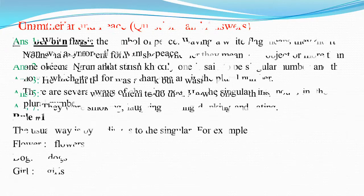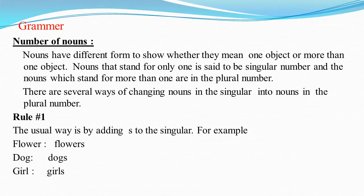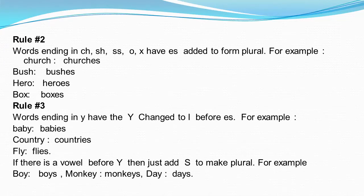Now let's move on to the grammar: Number of nouns. Nouns have different forms to show whether they mean one object or more than one object. Nouns that stand for only one are said to be singular number, and nouns which are used for more than one are in the plural number. There are several ways of changing nouns from singular into plural. Rule number 1: The usual way is by adding S to the singular. For example, flower — flowers, dog — dogs, girl — girls. Rule 2: Words ending in CH, SH, SS, O, X have ES added to form plural. For example, church — churches, bush — bushes.